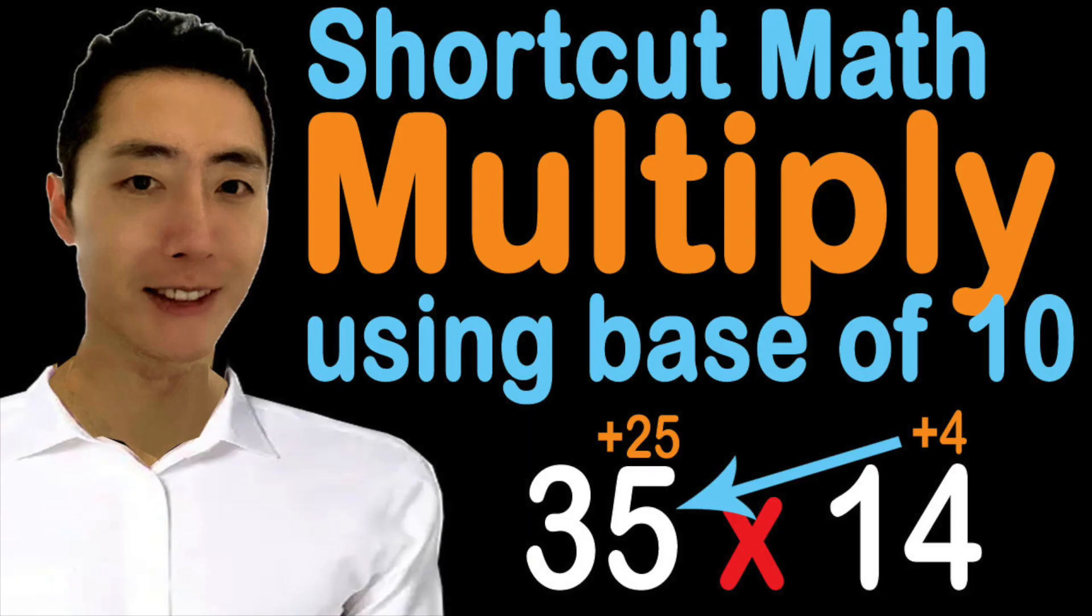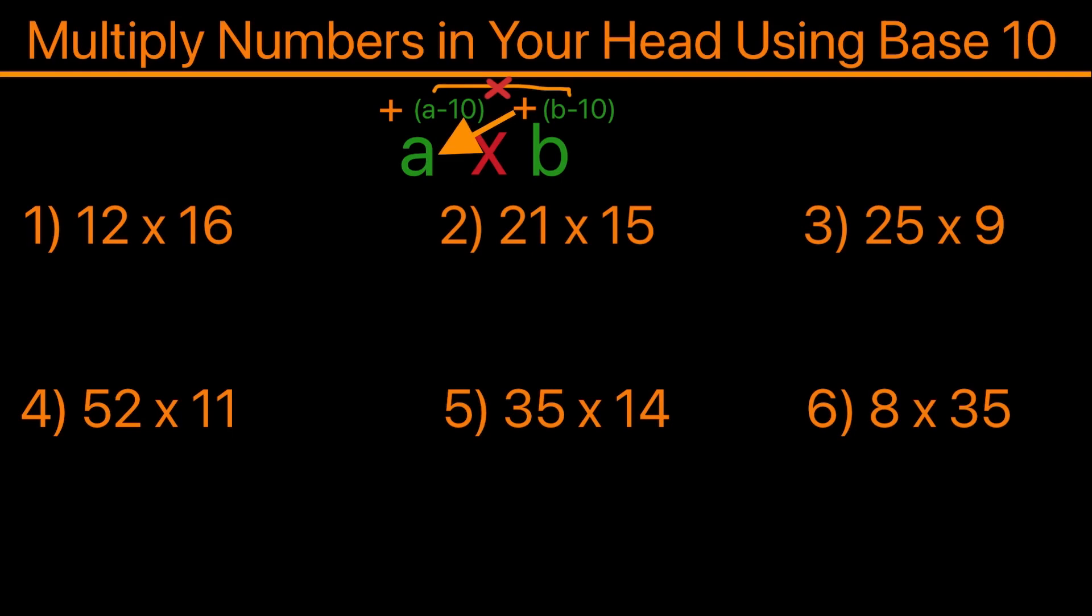In this video I'll be going over how to multiply numbers in your head using base 10. The way to multiply numbers using base 10 is to first subtract 10 from both numbers, then take the result from one number, add it to the first number, and place it in the answer position.